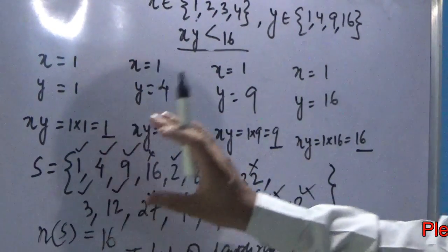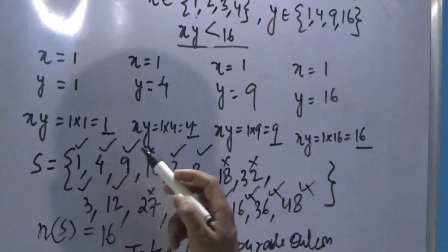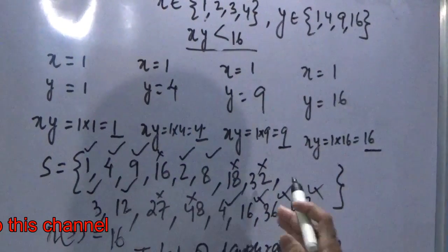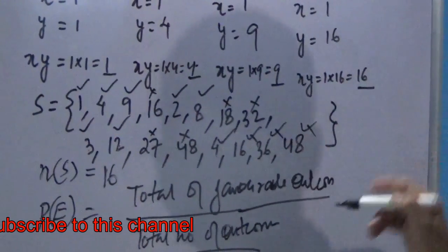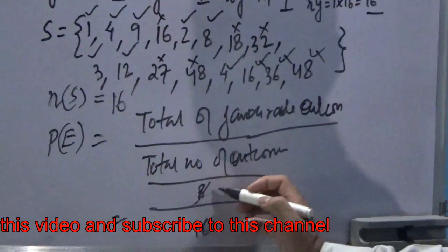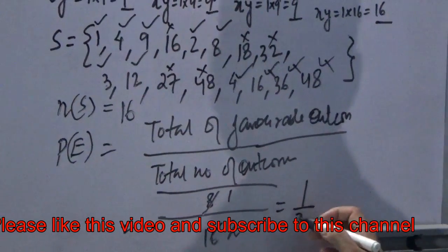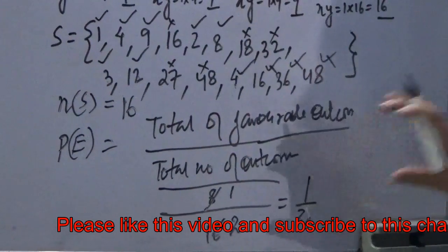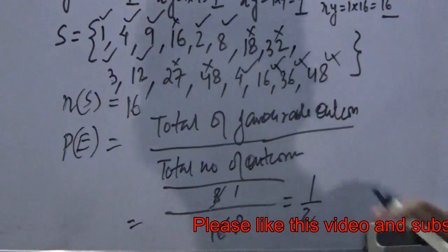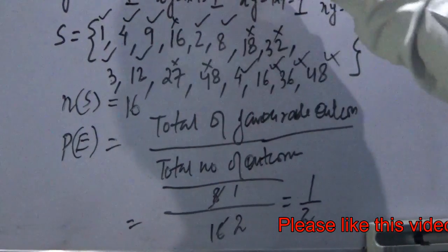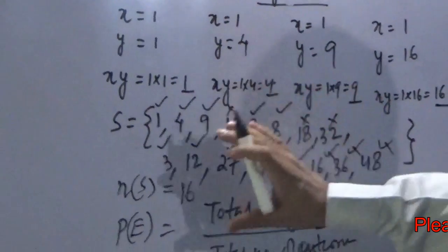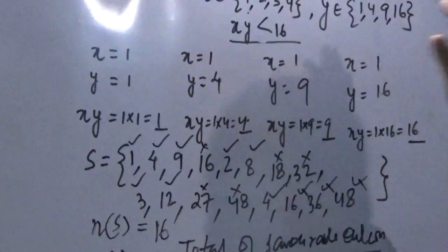So how many numbers or elements actually follow this rule? 1, 2, 3, 4, 5, 6, 7, 8. After this, we cannot take because it is either 16 or more than that. So the total number of favorable outcomes will be 8. So again we have got 8 by 16. We can cut it, and finally we will get the probability as 1 by 2. 1 by 2 means what? There is a 50% chance of this condition getting fulfilled. There is a possibility in 50% of times that these x and y, when they are multiplied, will give less than 16. So this is how we can find out following all the conditions mentioned in this question.